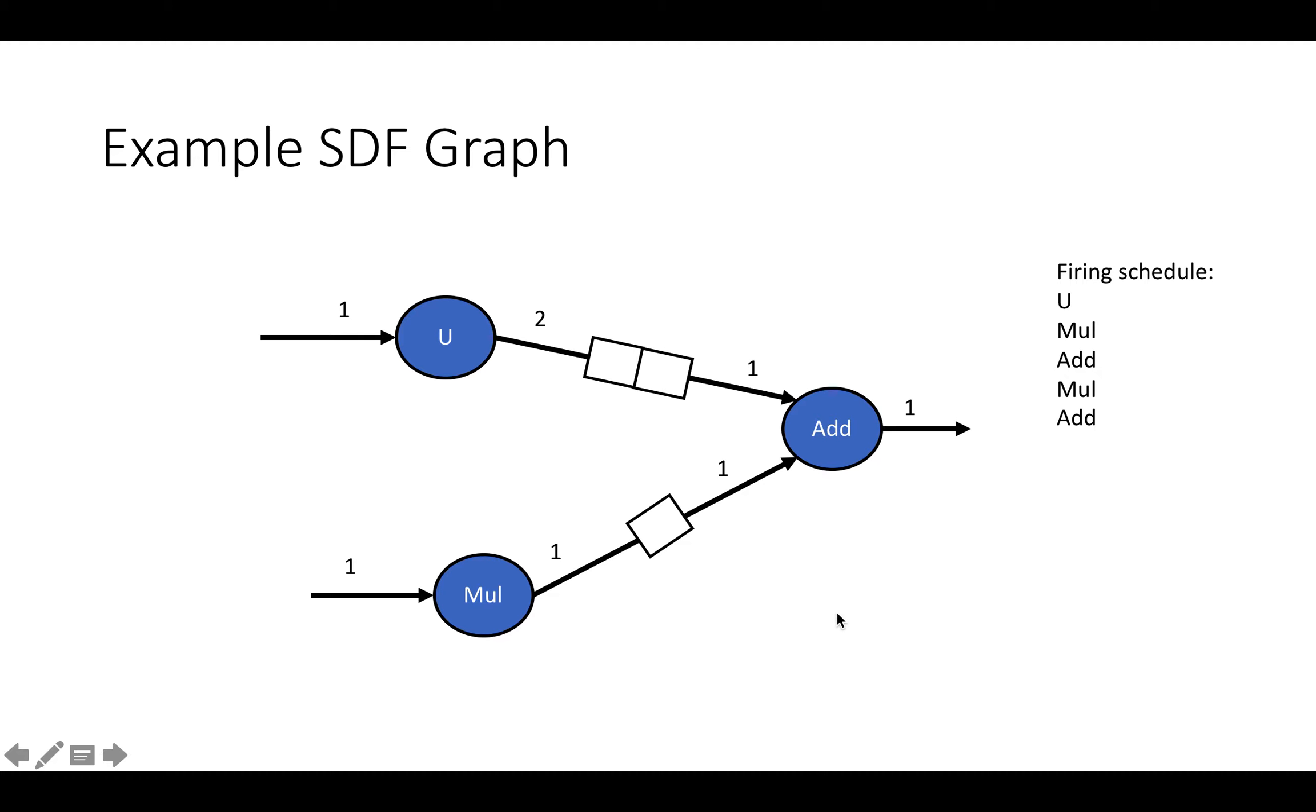So let's just look at an example of this firing schedule. First, we're gonna fire our upsample, so we're gonna take in one piece of data and output two and we're gonna put those two pieces of data in this FIFO.